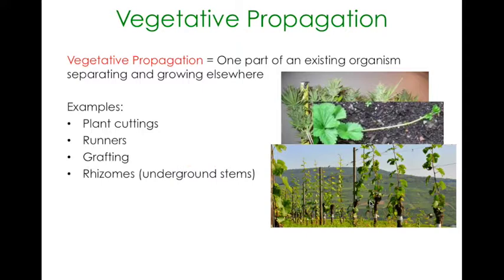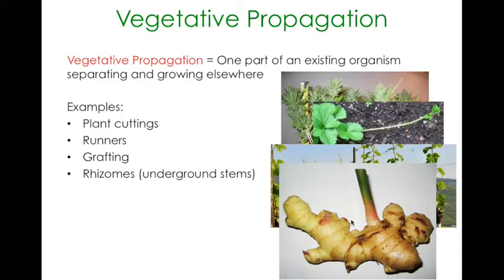Rhizomes are probably less known, but if I showed you this picture you'd probably recognise that this is a ginger root. A rhizome is basically like an underground stem — it holds nutrients and grows underground. In ginger plants, the part that people normally eat is actually the rhizome, and there is a plant that sprouts from that. If I cut a section of the ginger and plant it in the ground somewhere else, a new plant will sprout from it, because that underground stem has huge reserves of nutrients.